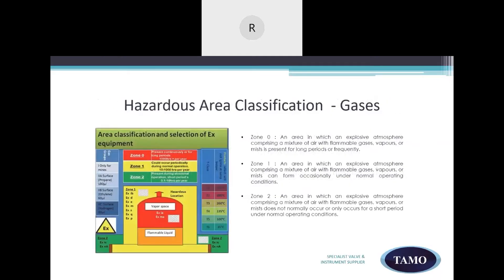Let's look at the hazardous area classification of gases. Releases of flammable gases and vapors will usually result in flammable atmospheres. And these areas are classified as Zone 0, Zone 1, and Zone 2. Zone 0, where flammable atmosphere is present continuously for long periods. Zone 1, where a flammable atmosphere is likely in normal operation occasionally. And Zone 2, where an explosive atmosphere is present less than 10 hours per year.